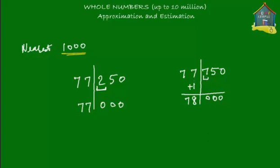So 77,750 rounded to the nearest thousand gives 78,000, and 77,250 rounded to the nearest thousand gives 77,000. When you round up, the new number is greater than the original; when you round down, the new number is smaller. But although they are not exactly equal, the new number and the given number are still approximately equal — they are quite close to each other.